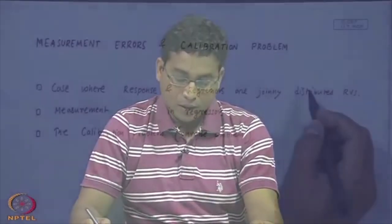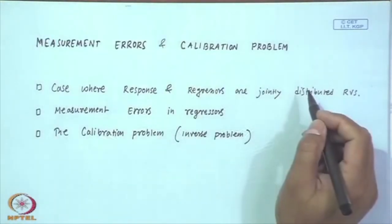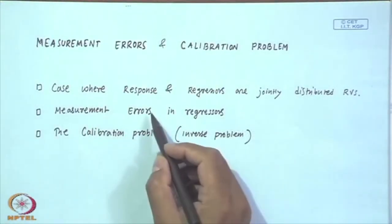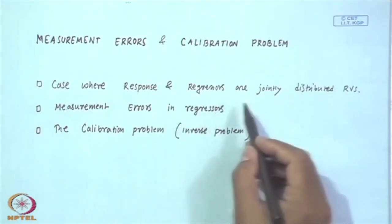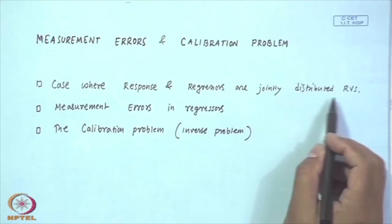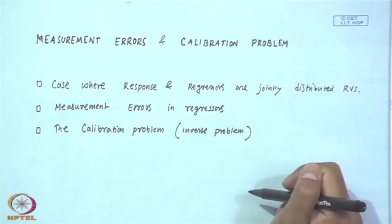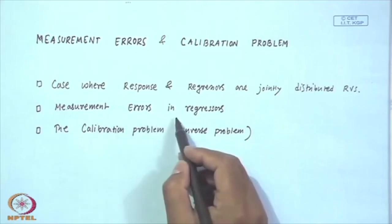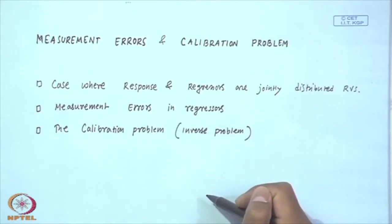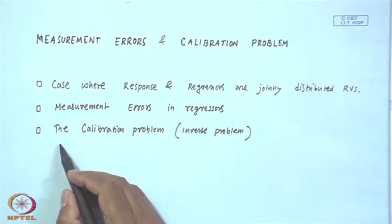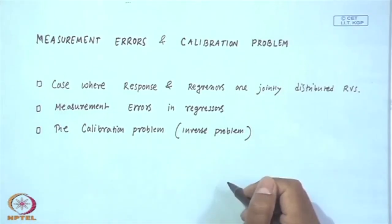Hi, so today we will be talking on a new topic called measurement errors and calibration problem. Here is the content of this topic: the case where the response and regressors are jointly distributed random variables, measurement error in regressors, and also the calibration problem, which is called the inverse problem.